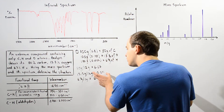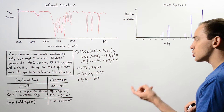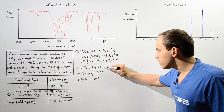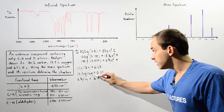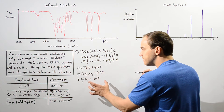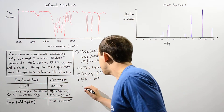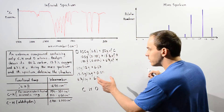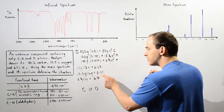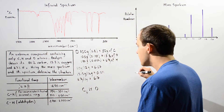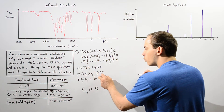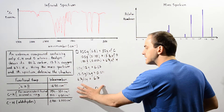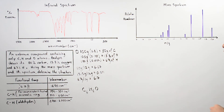We don't want to use fractions; we want whole numbers. We convert these by identifying the smallest value — which is 0.831 — and dividing each value by it. So 6.67 divided by 0.831 gives about 8 for carbon, 6.7 divided by 0.831 gives about 8 for hydrogen, and 0.831 divided by itself gives 1 for oxygen. So the empirical formula is C₈H₈O.